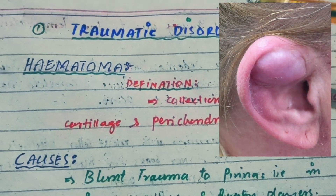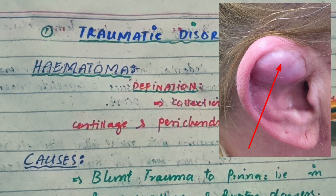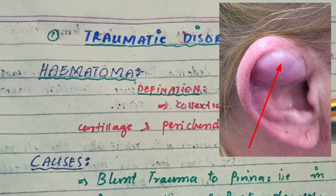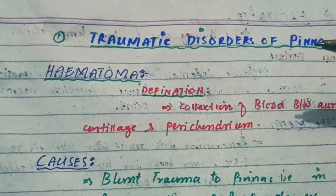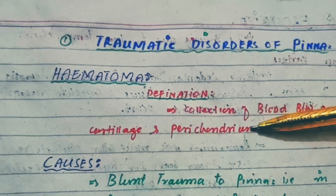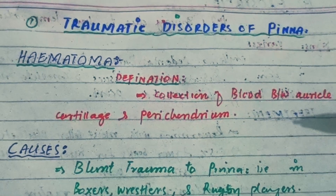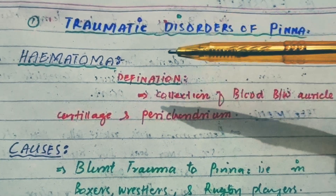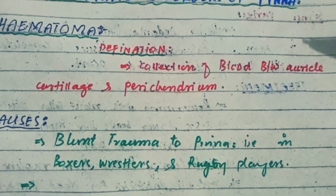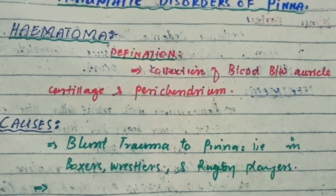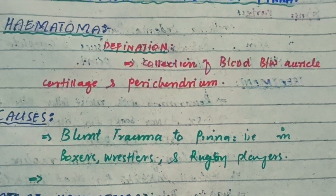The first traumatic disorder is the hematoma. Hematoma is the collection of blood between the auricle cartilage and the perichondrium of the cartilage. The cartilage is covered by a thin layer called the perichondrium, so when blood accumulates between the perichondrium and the cartilage, this condition is called a hematoma of the auricle. The main cause of hematoma is blunt trauma to the auricle.